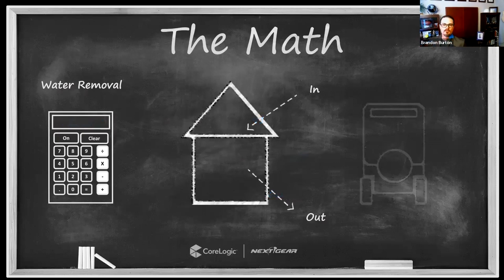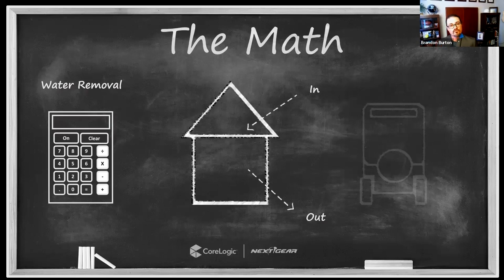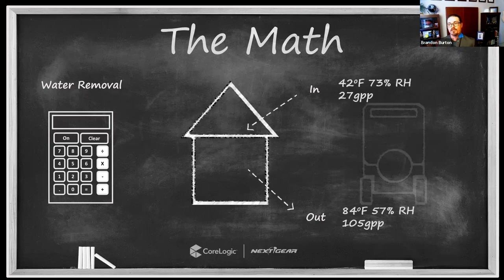Now let's move over to the ventilation option. Dehumidifiers are one option for removing moisture from air; ventilation is the other. To understand the value of ventilation, we start out exactly the same way — we compare the amount of moisture outside or in the space we're taking air from to the amount of moisture inside the airspace, and compare the difference in grains.